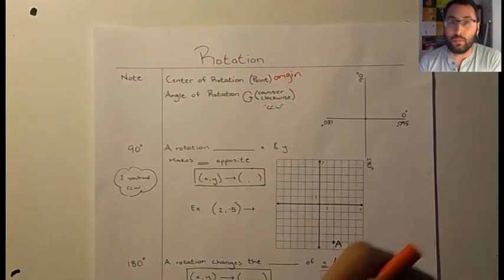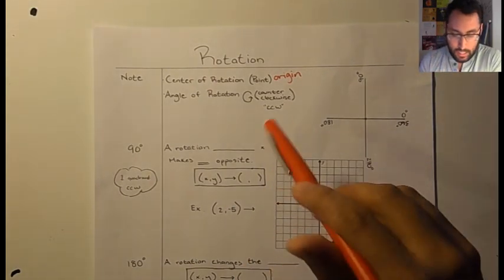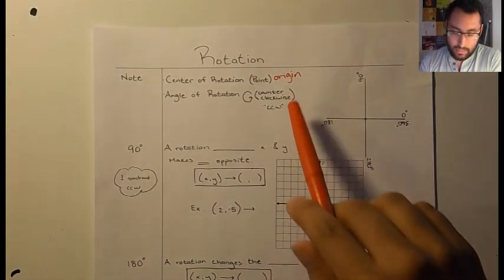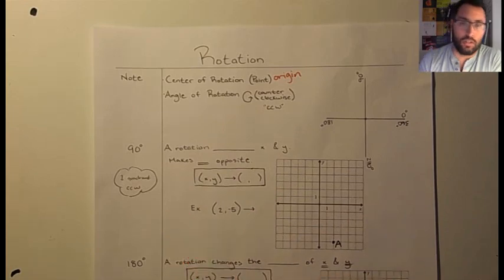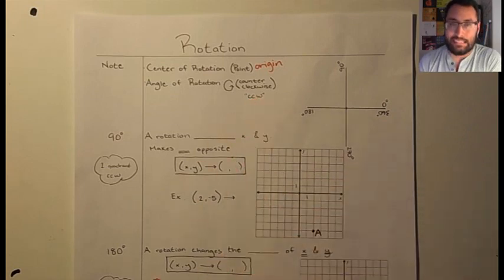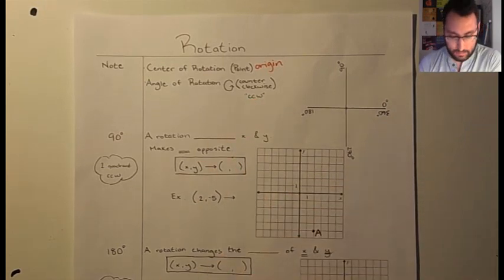We also need an angle of rotation. We're going to be focusing on three angle rotations. Whenever we rotate something, it's always going to be counterclockwise, so the opposite way of a clock. And I'm going to abbreviate it for our notes as CCW, counterclockwise.